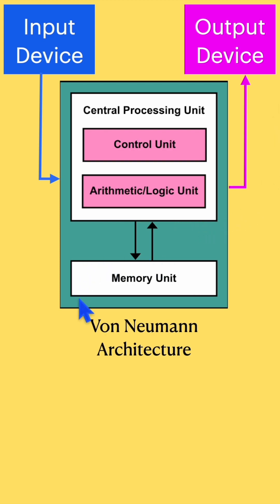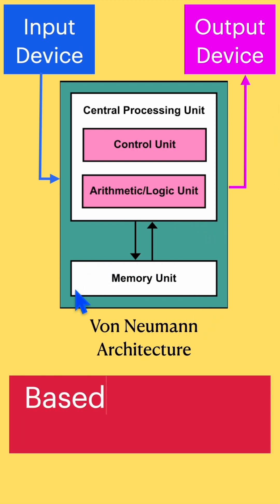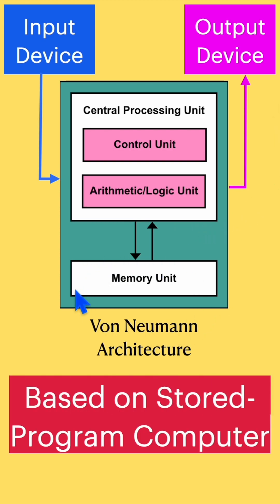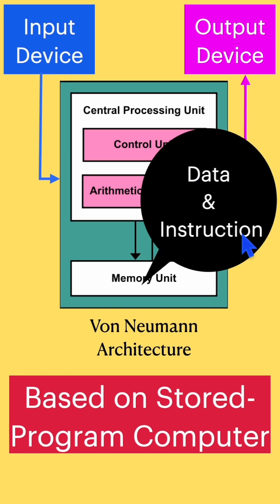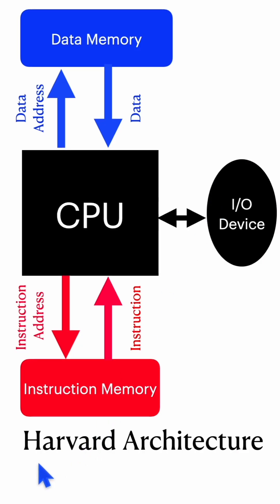This architecture was based on a stored program computer, which means your data and instructions will be stored in the same memory, and these two cannot be accessed at the same time. This was the major drawback of von Neumann architecture, for which another architecture was proposed called Harvard architecture.